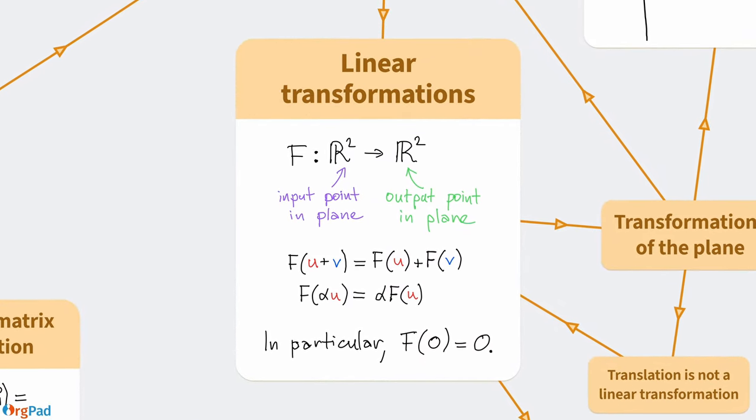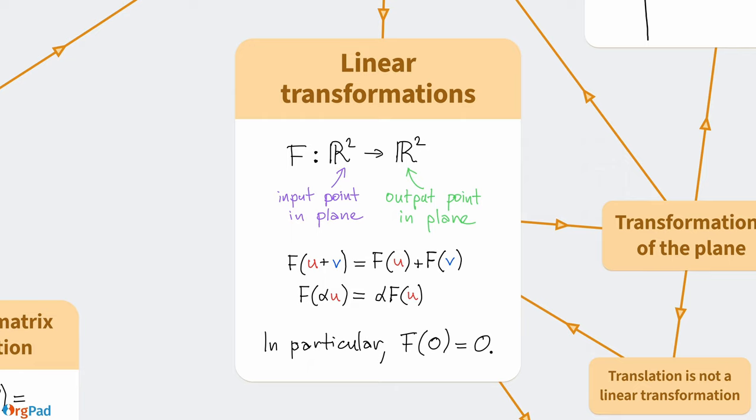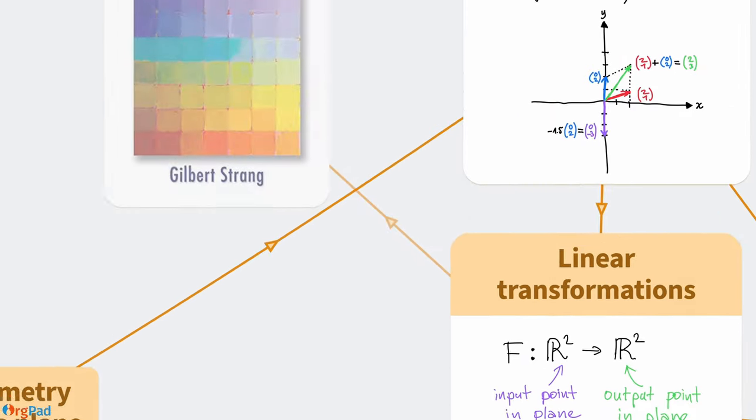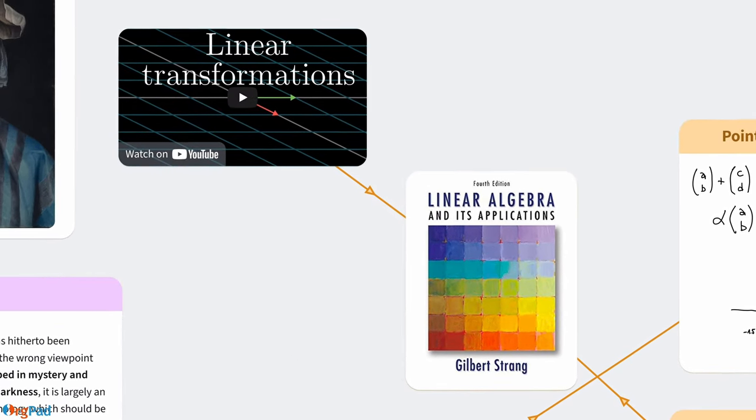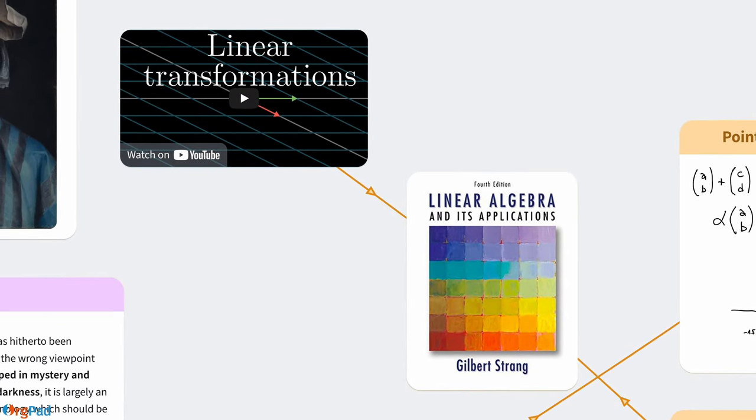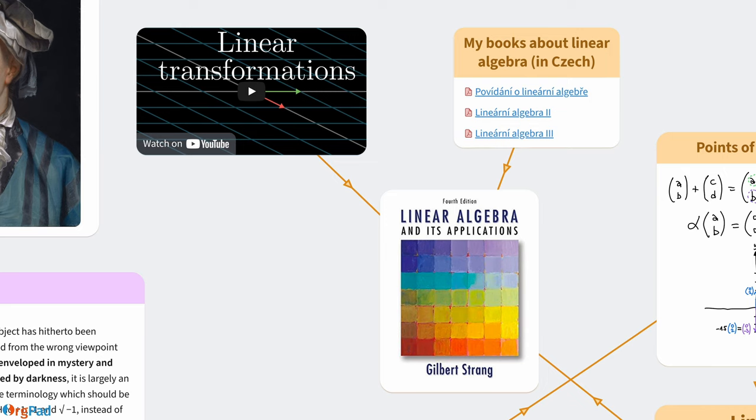I believe the concept of linear transformations and their matrix representation is the single most important idea in all of mathematics. For instance, the derivative of a function satisfies these equalities, so it is a linear transformation. If you want to learn more about linear transformations, I recommend this excellent book by Gilbert Strang. You can also check out a free 3Blue1Brown video that uses animation to explain linear transformations. I taught linear algebra for several years and have written a few books in Czech about it. Needless to say, it is one of my favorite topics in mathematics.